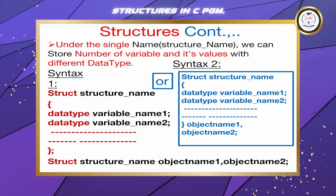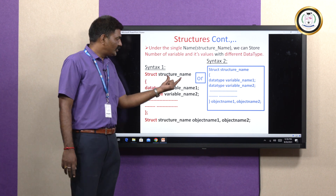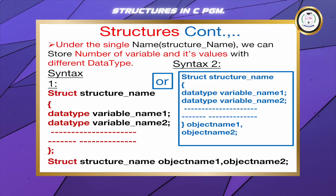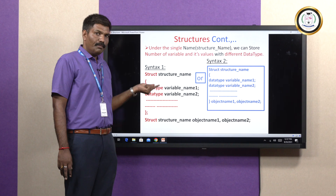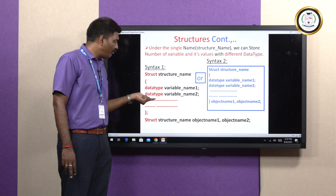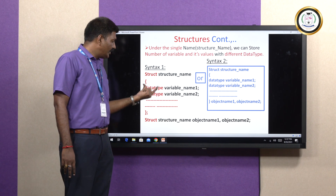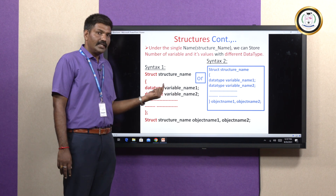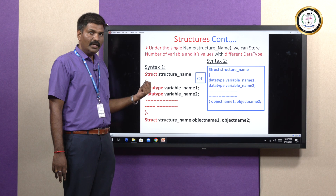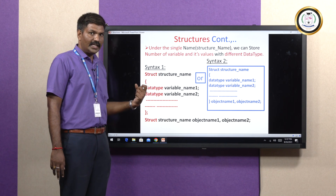You can see the structure definition and syntax here. The keyword is struct, followed by the structure name, which is a user-defined name — we can provide it ourselves. For example, student details. Inside student detail, we provide the member variables. You can provide n number of member variables. The student name may be up to 20 characters, so: char name[20].